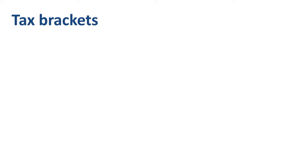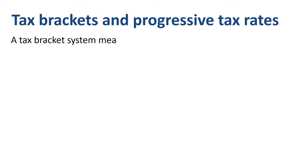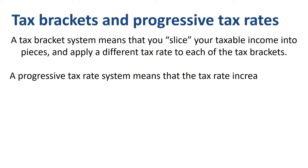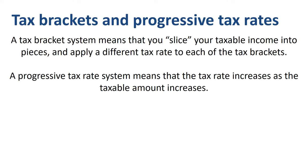Many countries in the world use tax brackets and a progressive tax rate system. A tax bracket system means that you slice your taxable income into pieces and apply a different tax rate to each of the tax brackets. A progressive tax rate system means that the tax rate increases as the taxable amount increases. The term progressive refers to the way the tax rate progresses from low to high.